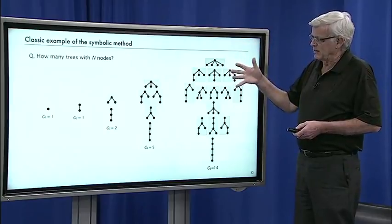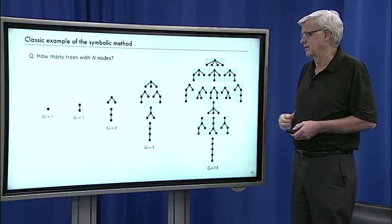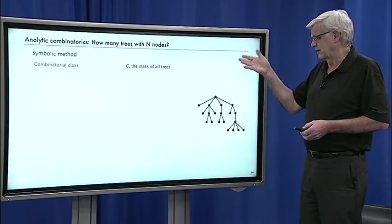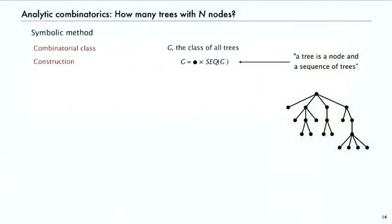And with the symbolic method, we can immediately derive the generating function for the Catalan numbers. So here's how it goes. We define the class of all trees to be G. And then the construction, using the basic operations, we say a tree is a node and a sequence of trees. It's as simple as that.